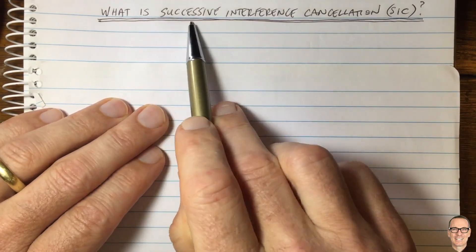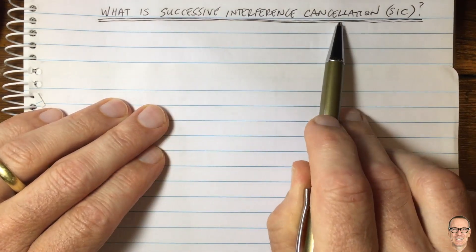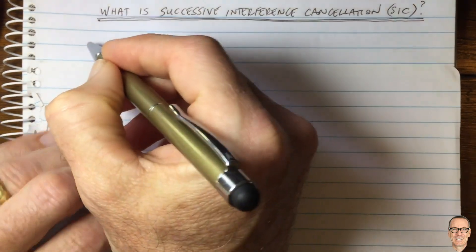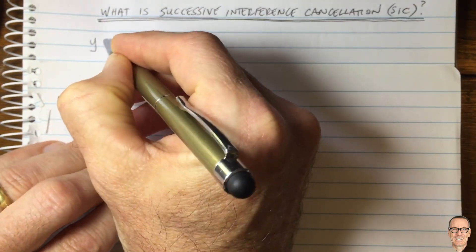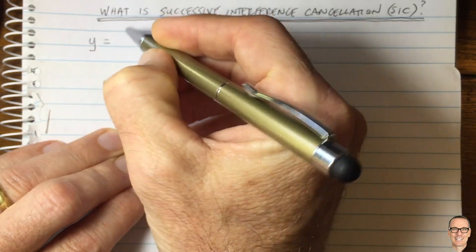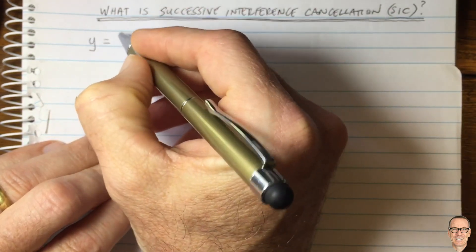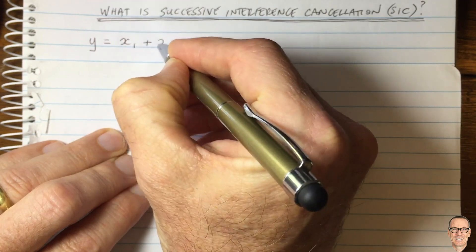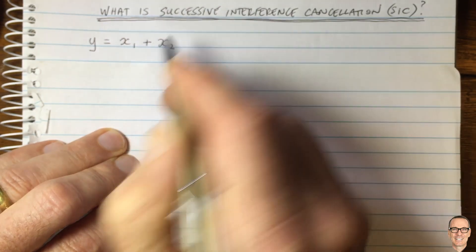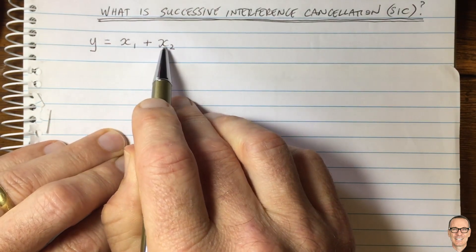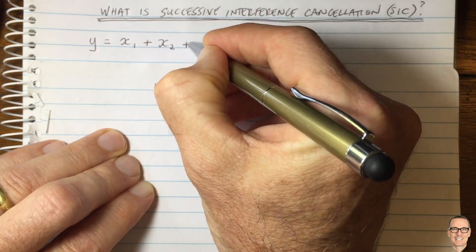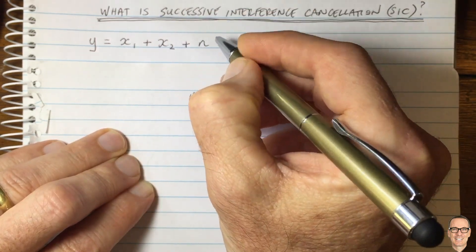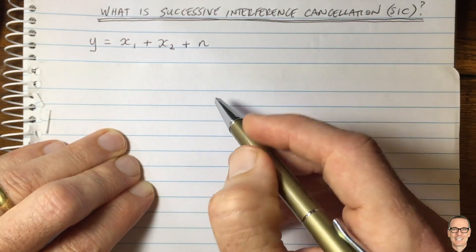What is successive interference cancellation in communication systems? Let's look at the uplink of a communication system, maybe a mobile communication system, where we have two users and their signals are X1 from user 1 and X2 from user 2, in an additive white Gaussian noise channel.